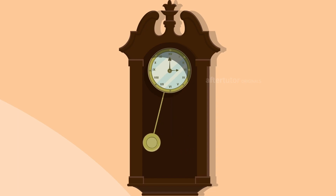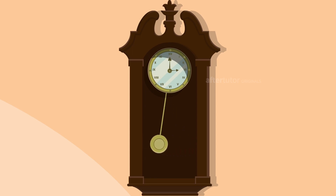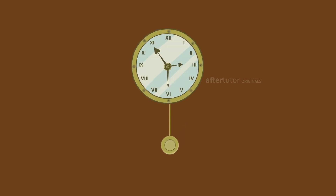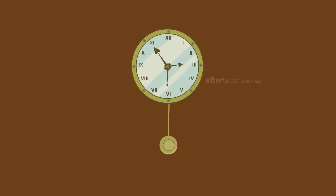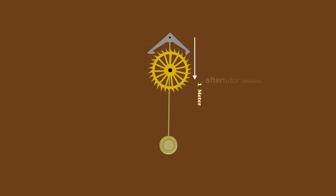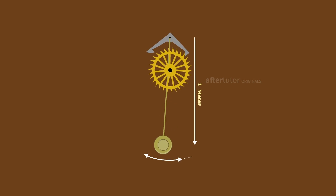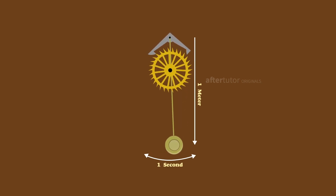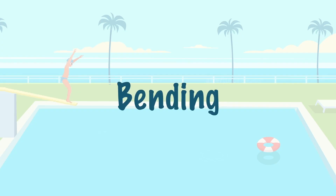Pendulum clocks are the best example of a torsional pendulum, which works by the principle of torsional oscillation. The torsional pendulums are used to mechanically calculate the time, depending upon the length and weight suspended in the torsion spring.